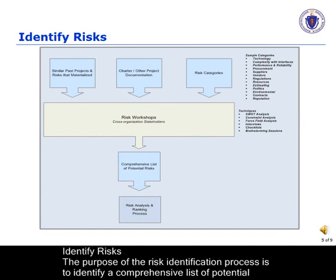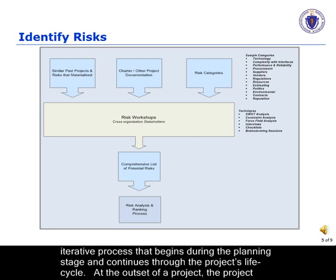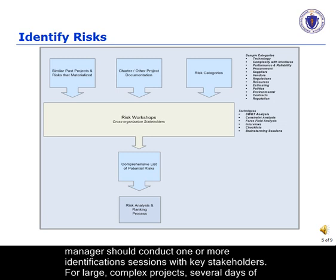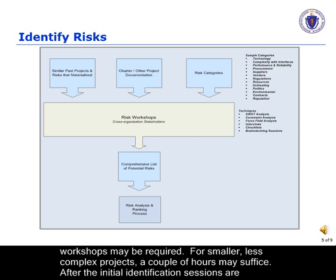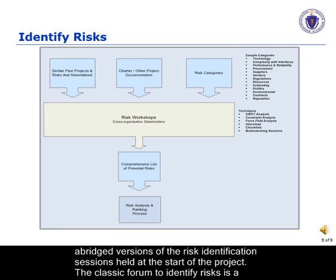The purpose of the risk identification process is to identify a comprehensive list of potential risks that could impact the project. Risk identification must account for both internal and external factors. Risk identification is an iterative process that begins during the planning stage and continues through the project's life cycle. At the outset of a project, the project manager should conduct one or more identification sessions with key stakeholders. For large, complex projects, several days of workshops may be required; for smaller, less complex projects, a couple of hours may suffice. After the initial identification sessions are held, regular risk scanning sessions are planned and conducted to determine whether the risk landscape has changed. These are typically abridged versions of risk identification sessions held at the start of the project.